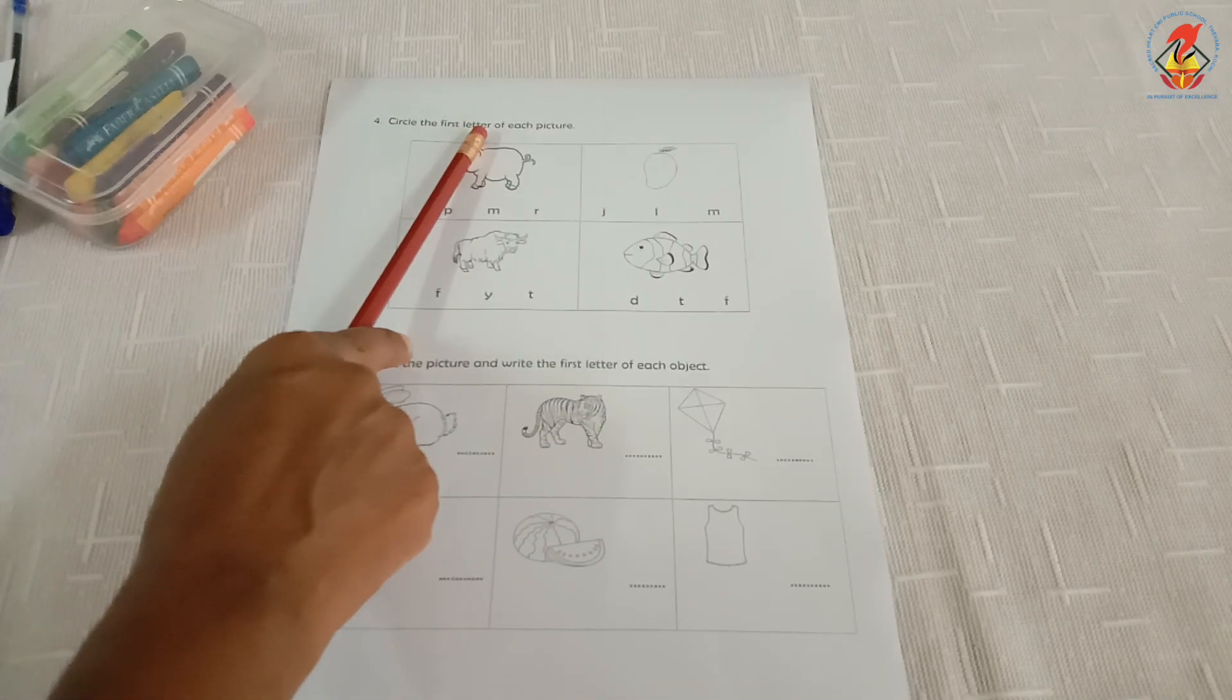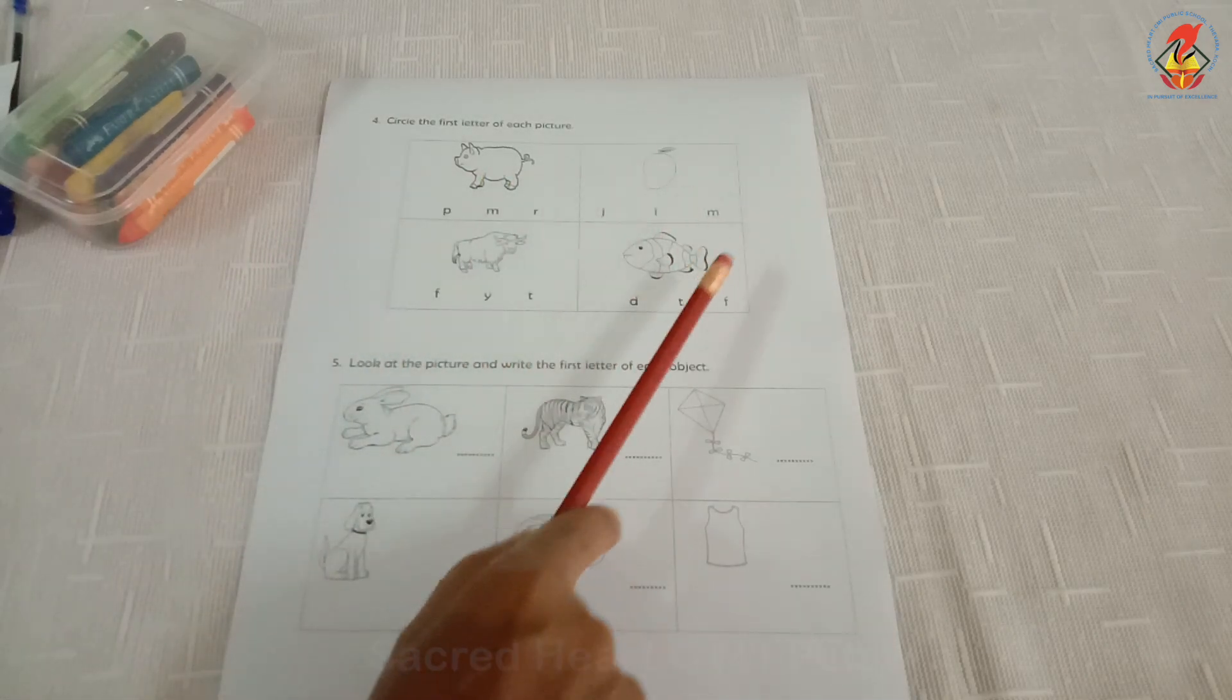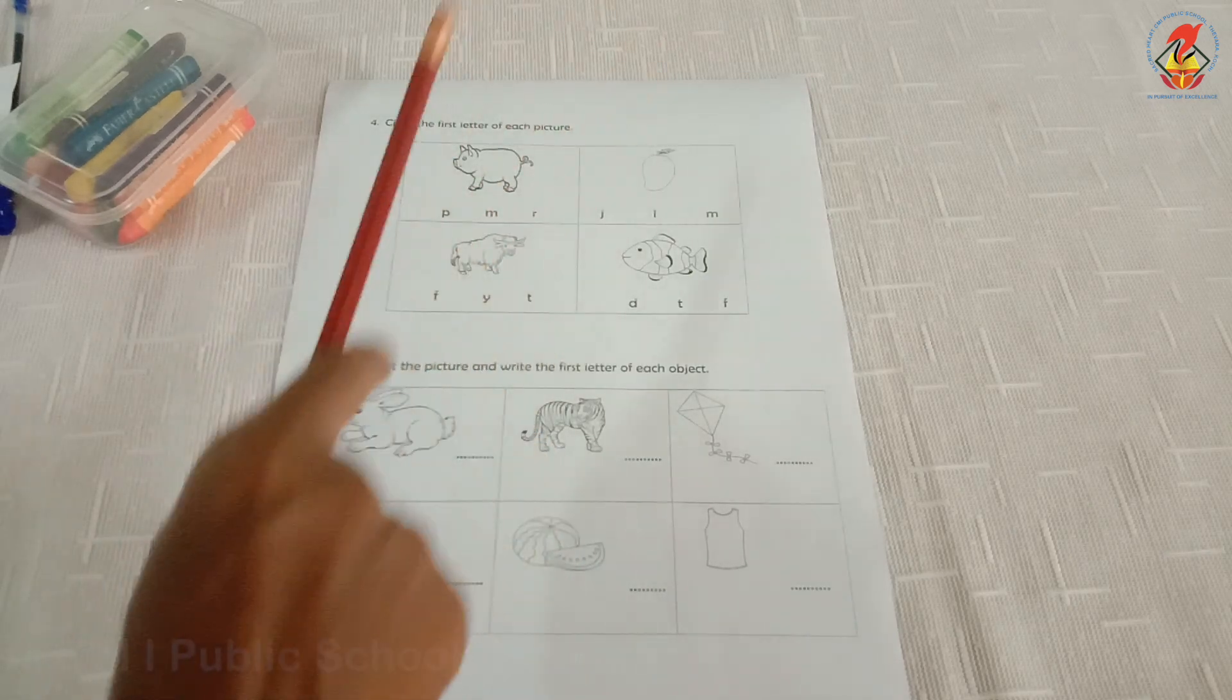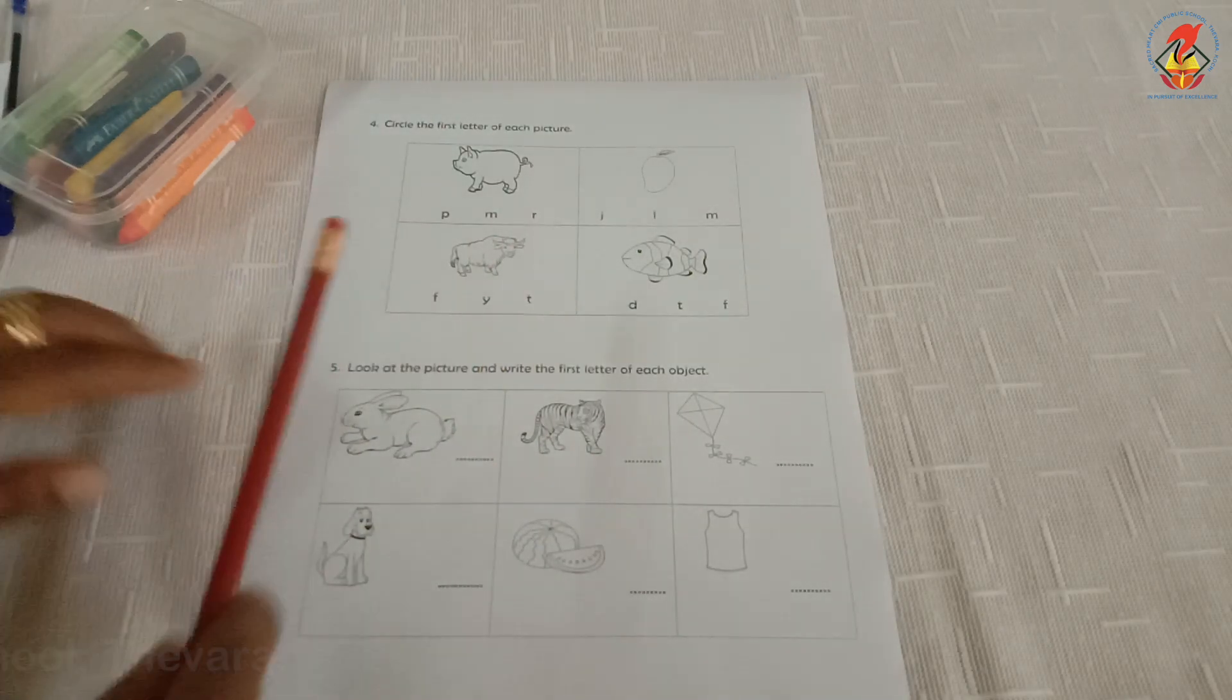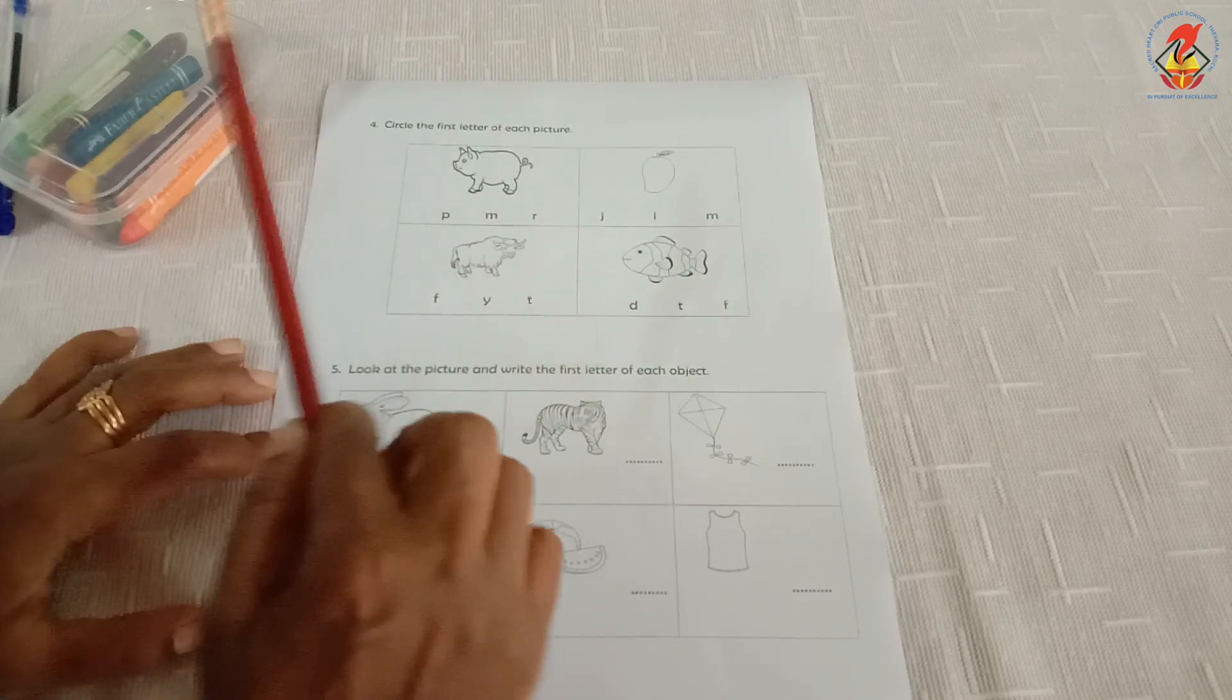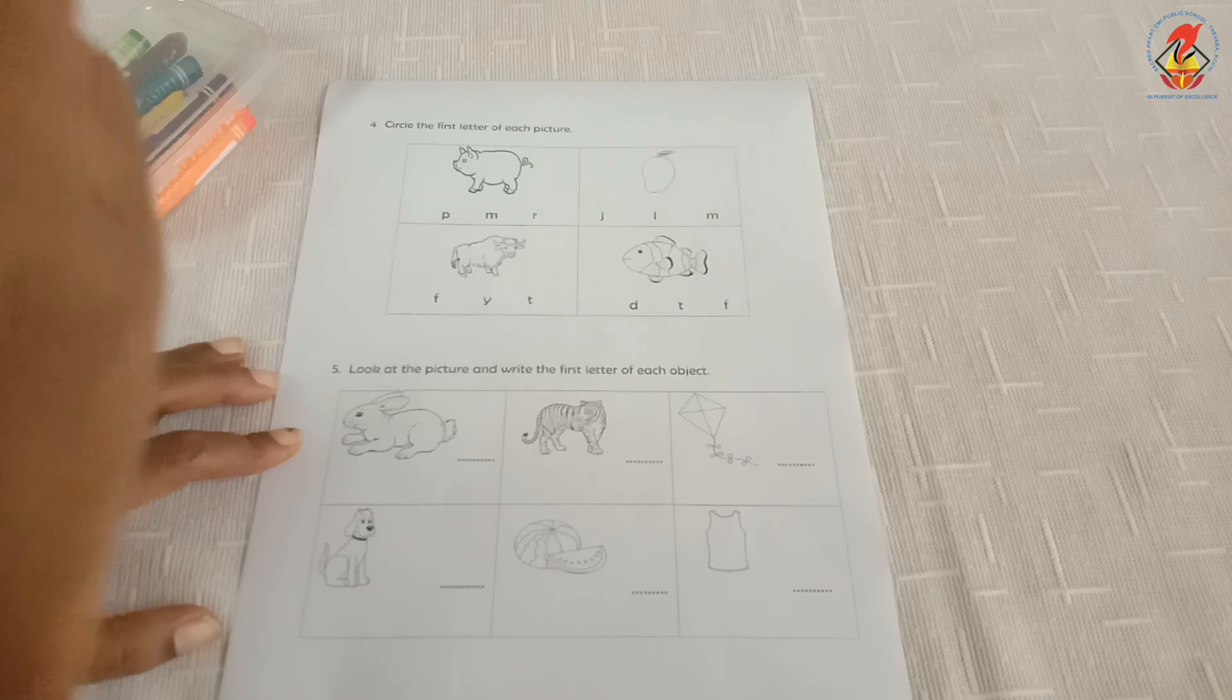The next question is, circle the first letter of each picture. Now, children, here you have given pictures in each box. You have to first identify the picture and then circle the letter that begins with the same sound. Can you say what is this? Pig. You can see here three letters. When you say pig, what is the beginning sound? P.